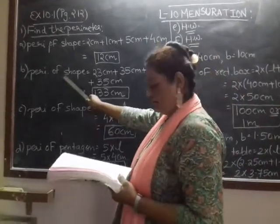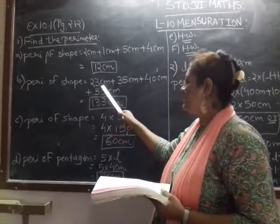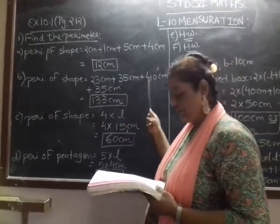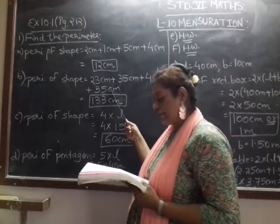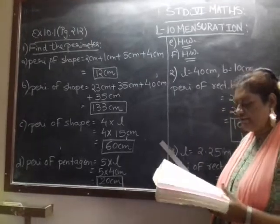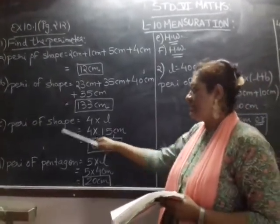Second, again perimeter of shape, the measurement given is 23 centimeter, 35 centimeter, 40 centimeter and again 35 centimeter. So you have to add all the measurements given for finding out the perimeter. So answer is 133 centimeter.